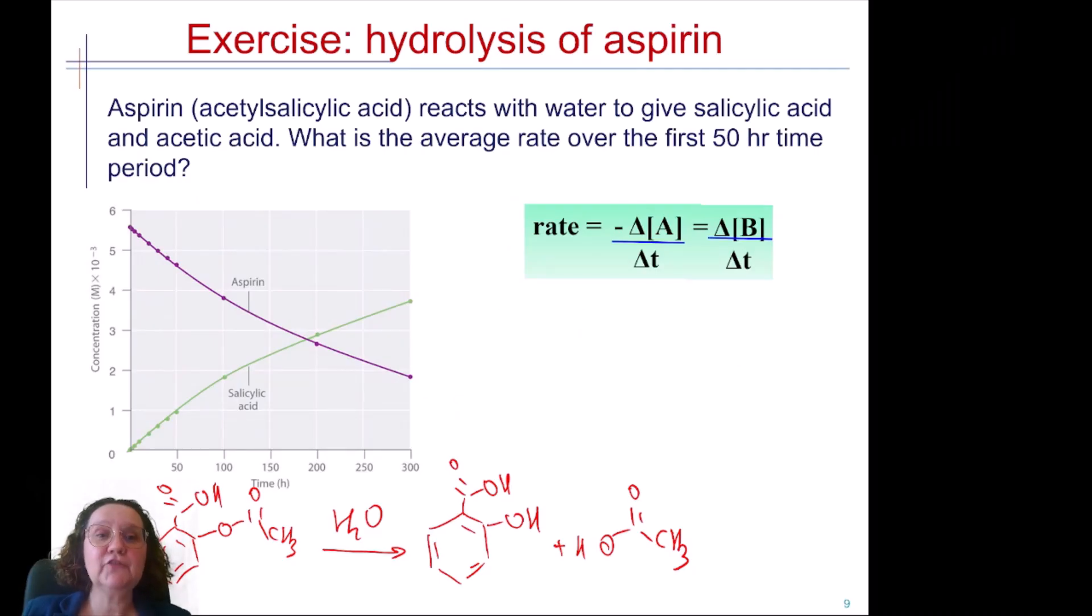Okay, the first thing I'm going to do is calculate it with respect to salicylic acid because I can see that the numbers are easier. So the rate with respect to salicylic acid would be the final concentration of salicylic acid at 50 hours, 1×10⁻³ minus the initial concentration which is 0.